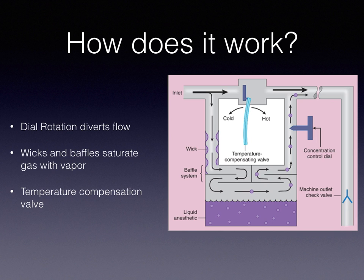The temperature-compensating valve — this blue strip right here, also called a bimetallic strip — opens or closes to allow more or less gas to bypass the vaporization chamber, in order to compensate for any temperature changes that affect the vapor pressure of the liquid anesthetic in the bottom, which you can see is this purple liquid.